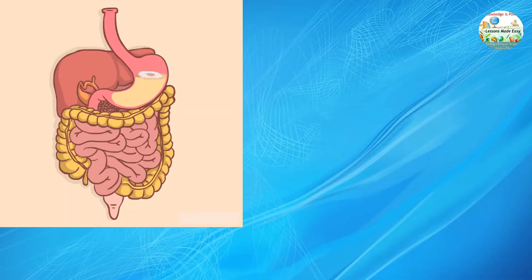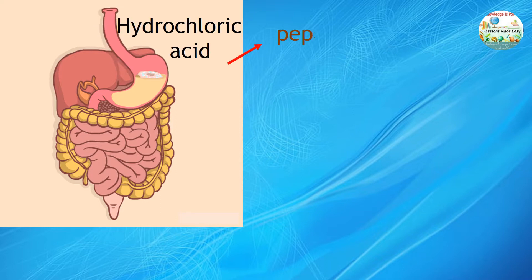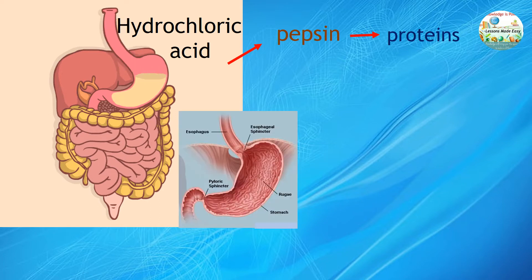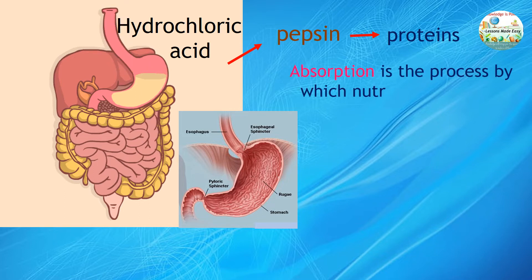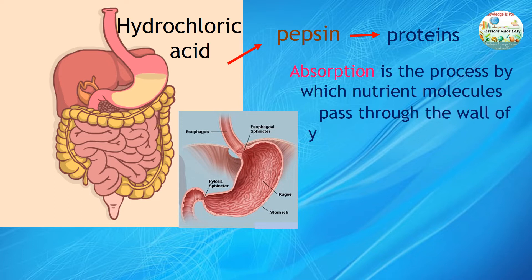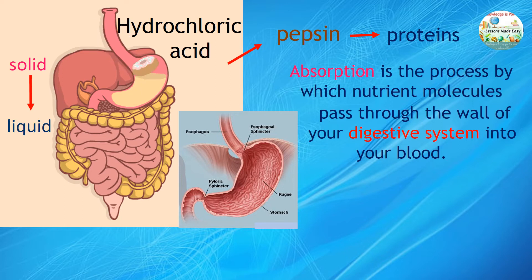When the food leaves the esophagus, it enters the stomach. Layers of muscle contract to produce a churning motion. The stomach releases hydrochloric acid, which activates pepsin, an enzyme that digests proteins. There are mucus-secreting cells in the stomach to protect it from the acid. Very little absorption takes place in the stomach. Absorption is the process by which nutrient molecules pass through the wall of your digestive system into your blood. Food remains in the stomach until all solid material has been broken down into liquid form, then it is released into the next part of the digestive system.